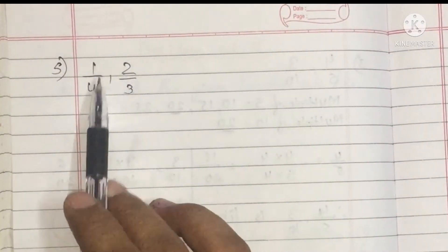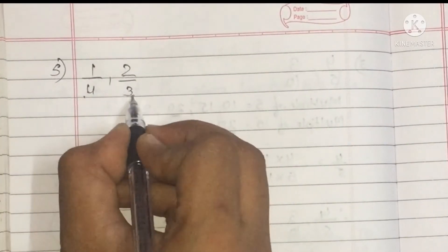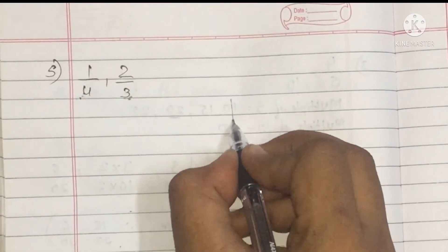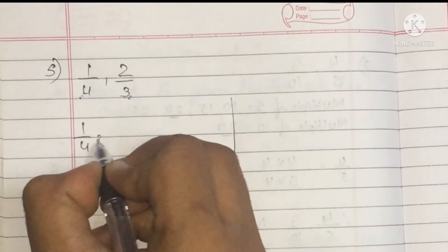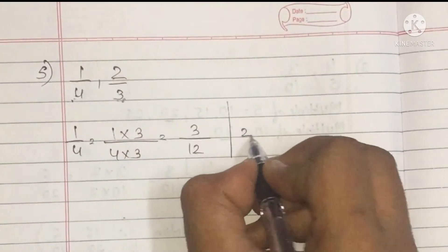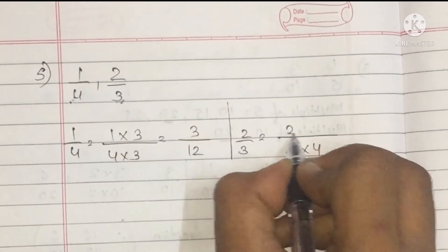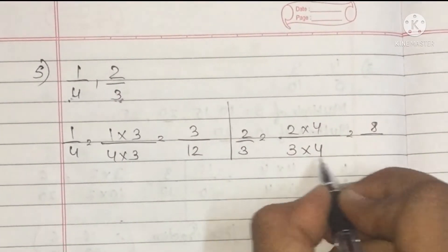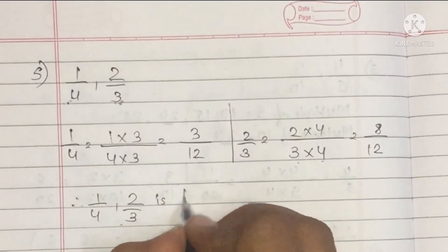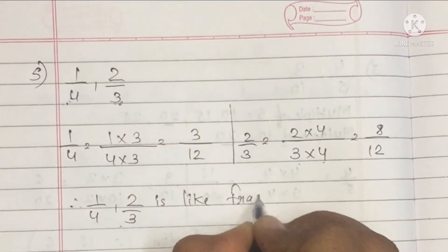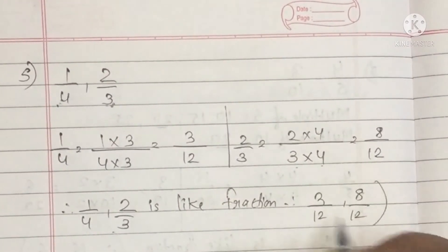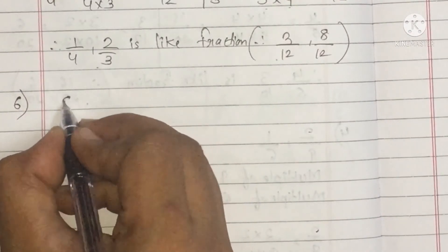Next, sum number 5: 1 upon 4 and 2 upon 3. We convert to like fractions. Since 4 threes and 3 fours both equal 12, we multiply 1 upon 4 by 3: 1 three is 3 and 4 threes are 12. We multiply 2 upon 3 by 4: 2 fours are 8 and 3 fours are 12. So 1 upon 4 and 2 upon 3 become 3 upon 12 and 8 upon 12, with 12 as the common denominator.